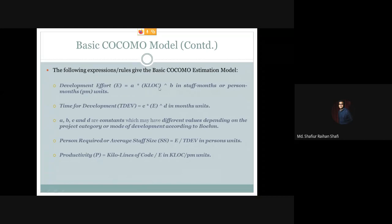Development effort = a × KLOC^b, where a and b are constants and KLOC is the kilo lines of code. The result will be in units of staff months or person months. So the rule for development effort is: E = a × KLOC^b.